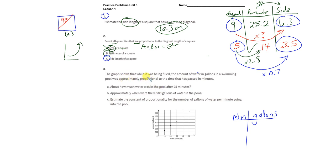Number three, this graph is showing a proportional relationship, an approximate one, between time passed and gallons that are filling up a pool of water. And about how much water is in the pool after 25 minutes.